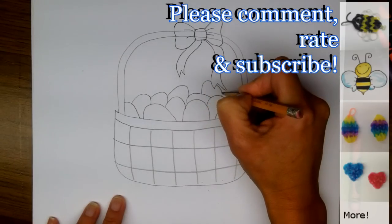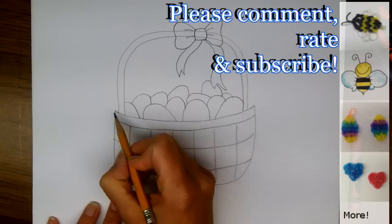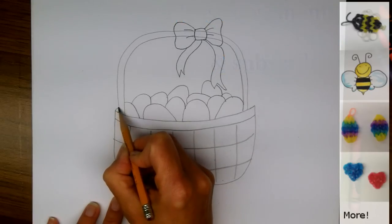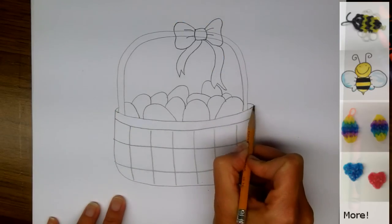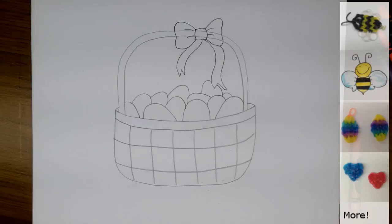This one's even behind my bow. All right, so now to make it look three-dimensional I'm just going to curve the shape of my basket around from the side. And that's it.